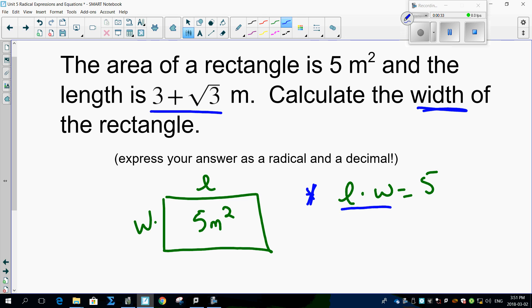Of course, you would divide each side by L, right? L's would cancel here, giving you W equals 5 over L. But look what the length is. The length is 3 plus root 3.